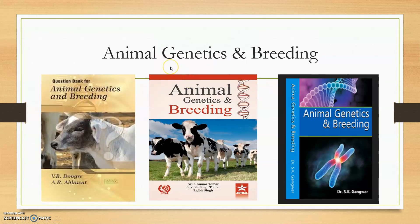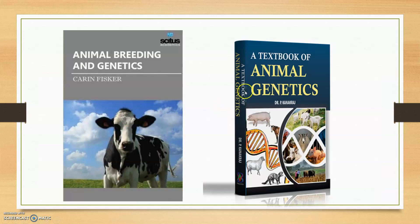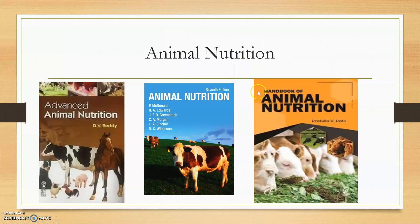Moving to animal genetics and breeding as a secondary topic — Arun Kumar Tomar's genetics book is the best book. The Kanagaraj book is also good for more pictures and more micro-genetical values.